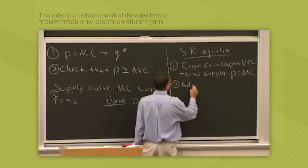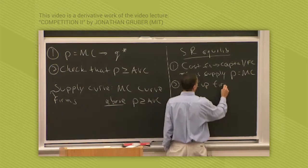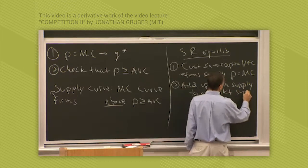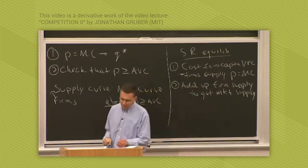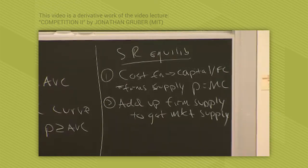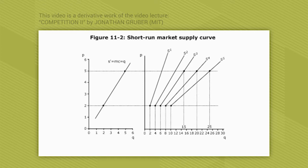That's step one. That's the step we've derived. The second step is we're going to add up the firm supply curves to get a market supply curve. So for example, suppose that there's five firms in the market. This is the second step, how we get to that short run market supply curve. Each firm has a marginal cost curve. Here we're using our same cost function where price equals marginal cost, where P equals Q is the supply curve. Each firm has that supply curve you see in the first panel.